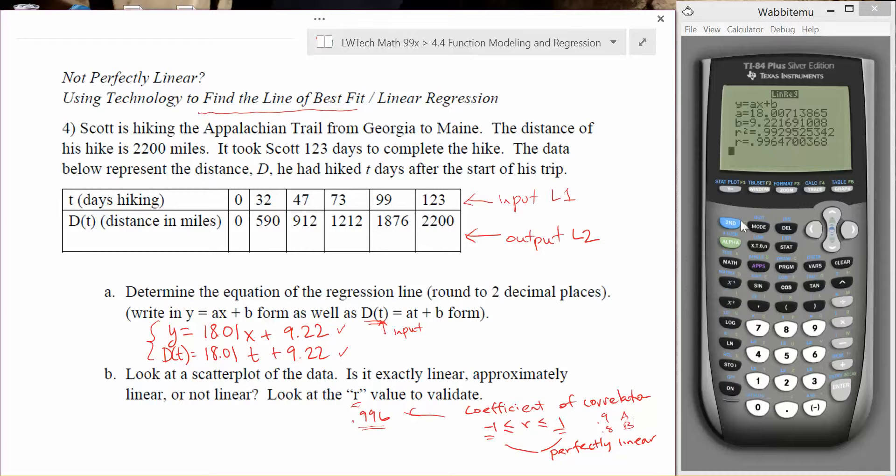If the r value does not show up on your calculator, what you need to do is go into the catalog. You can get there by hitting second zero. And you want to look for the function diagnostics on. Click on that button, hit enter twice, and the r value will start showing up. You only have to do that one time and then it will show up forever. It's just not for some reason a default function that's turned on on the calculators.